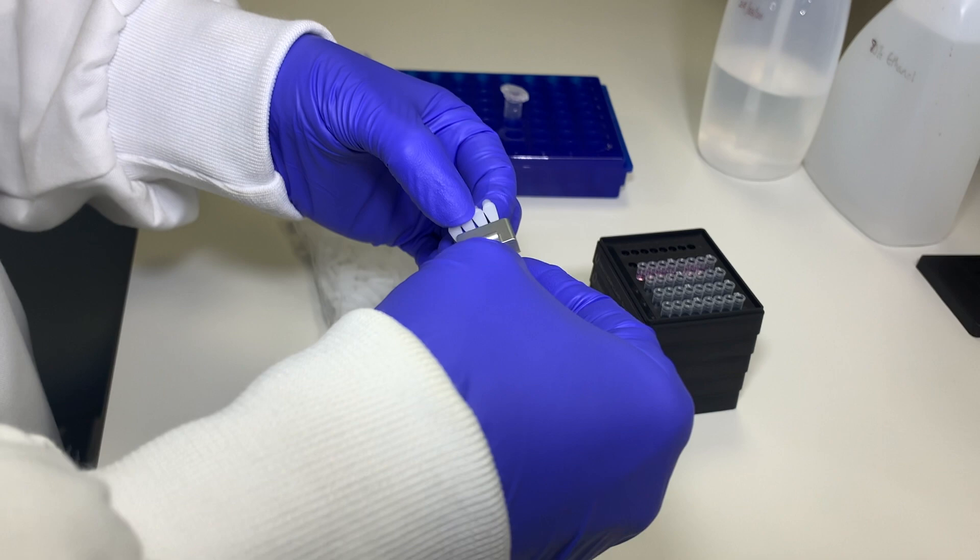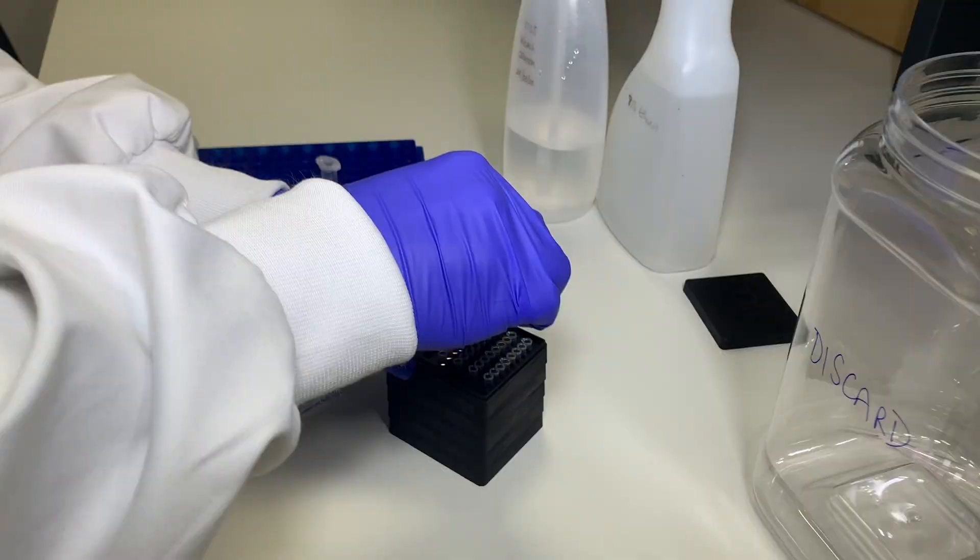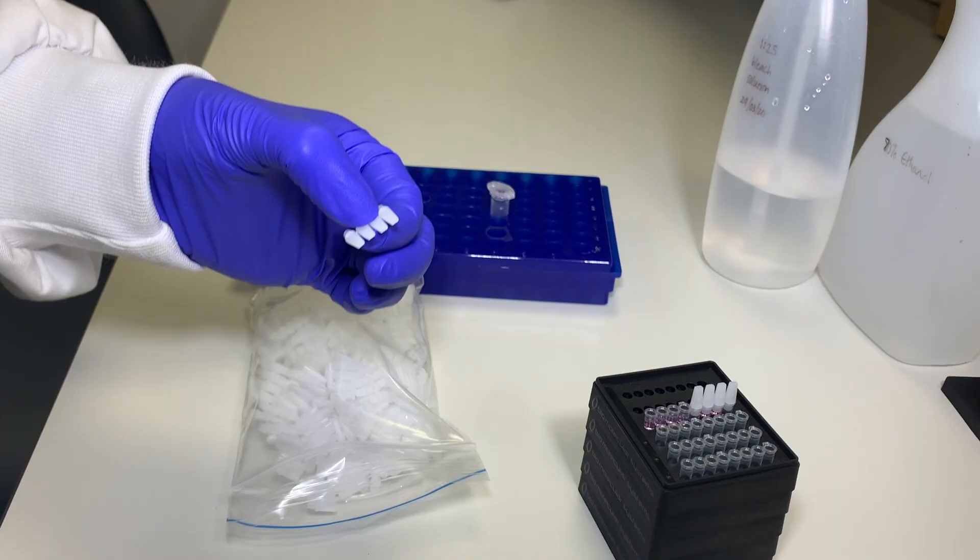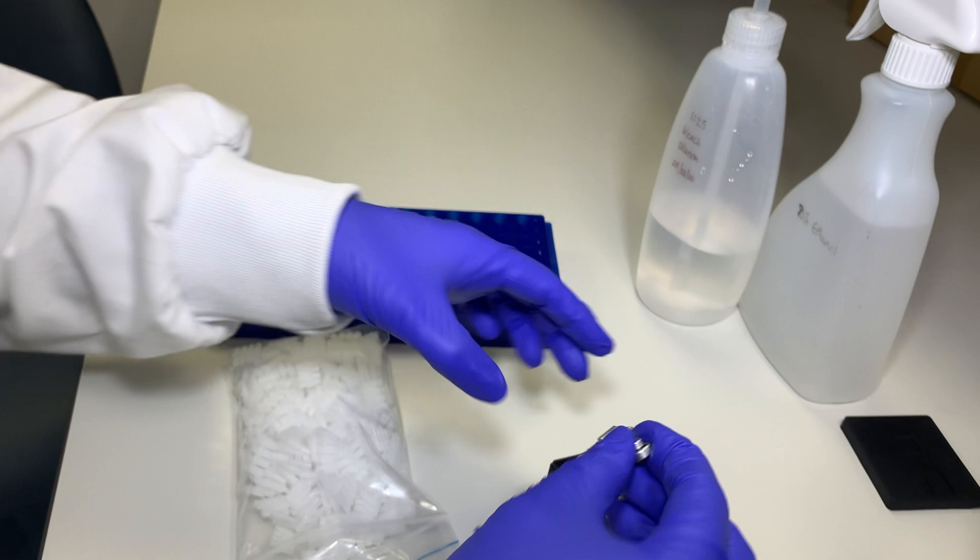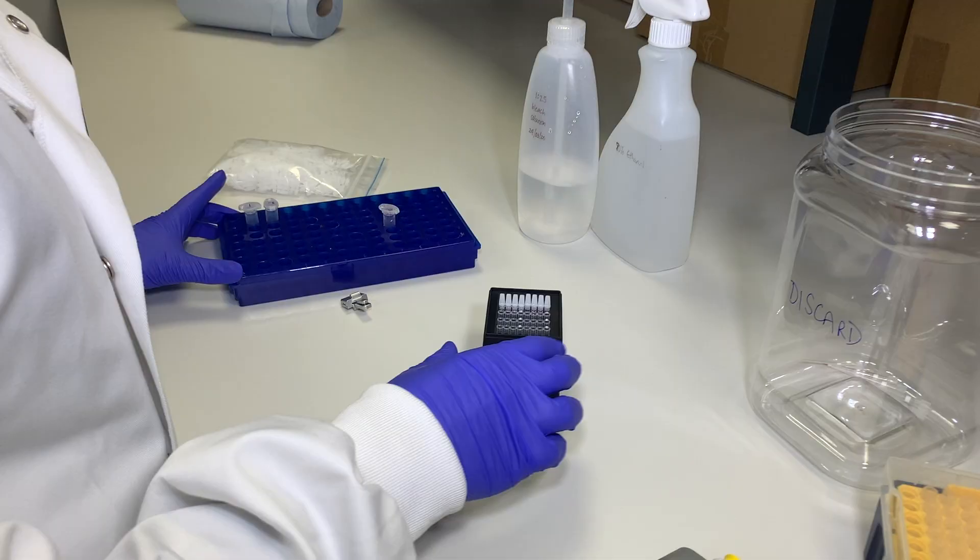Carefully take out a strip of lids and insert the pointed tops into the lid tool. Place the lids over the first strip of tubes and push down firmly to seal. Open the lid tool to release. Repeat for remaining tubes.